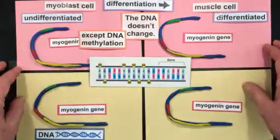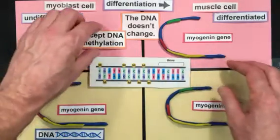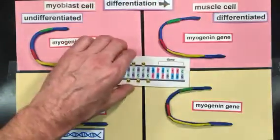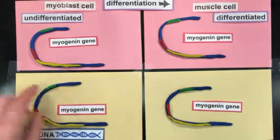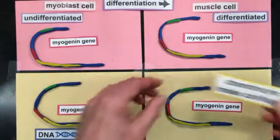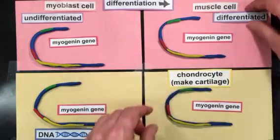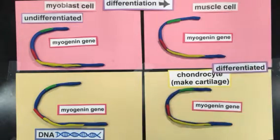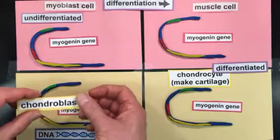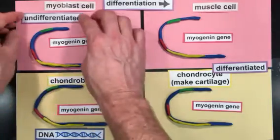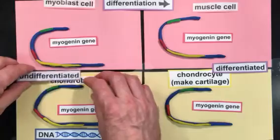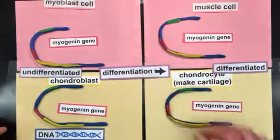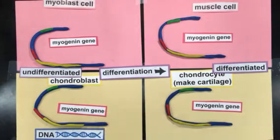Let's get back to the role of DNA methylation in cell differentiation. Two additional cells we need to add to our story are a chondrocyte — a differentiated cell in our body that makes cartilage or connective tissue — and a chondroblast, which is an undifferentiated precursor to a chondrocyte. Chondroblasts undergo differentiation to make chondrocytes.